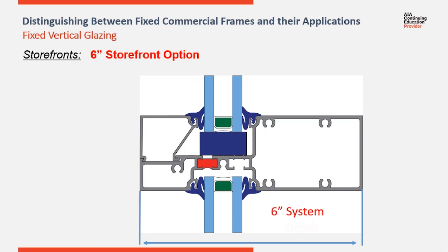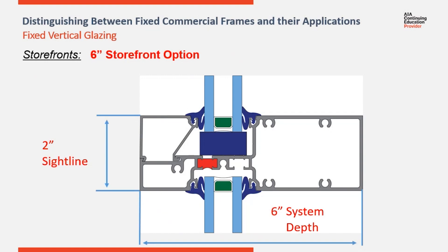Here's a section cut through a 6-inch storefront option. In this detail, the glazing is in the same plane as the quarter-inch system, but the interior section is an inch and a half deeper, adding to the structural capacity of the system. While still intended for lower elevations, the 6-inch option allows you to exceed the height limitation of a 4.5-inch system, but not compete with a curtain wall application.